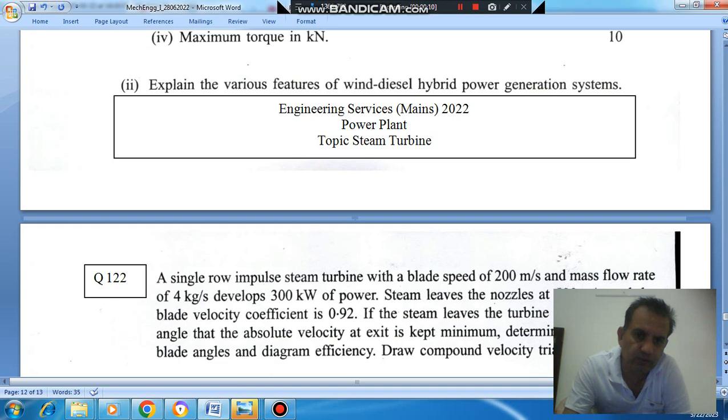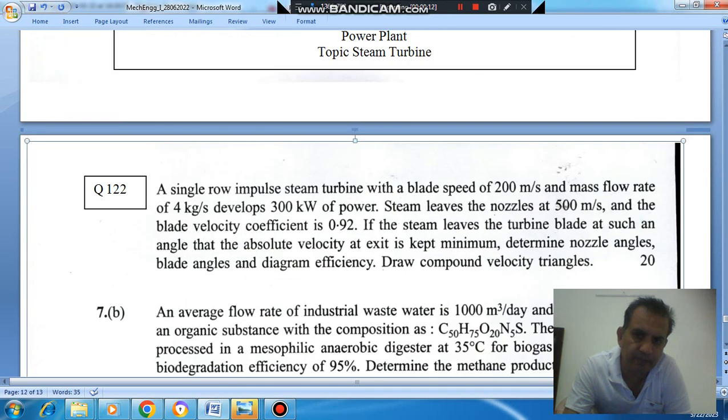Q122 is a single row impulse turbine with a blade speed of 200 m/s and mass flow rate of 4 kg per second develops 300 kW of power. The steam leaves the nozzle at 500 m/s and blade velocity coefficient is 0.92.